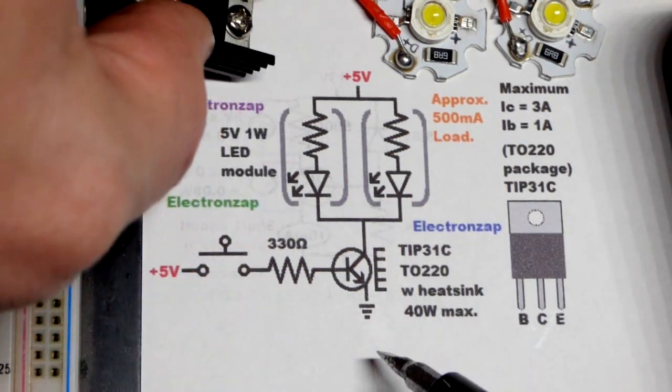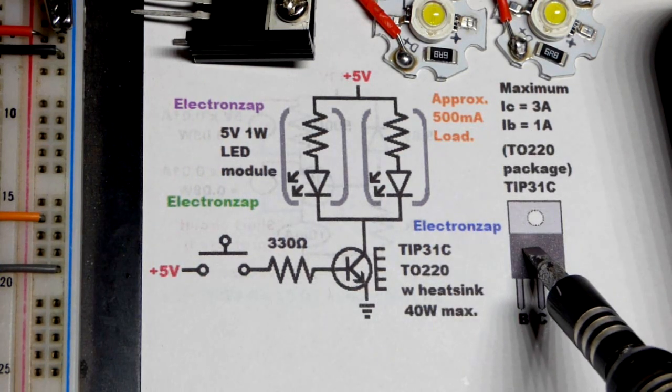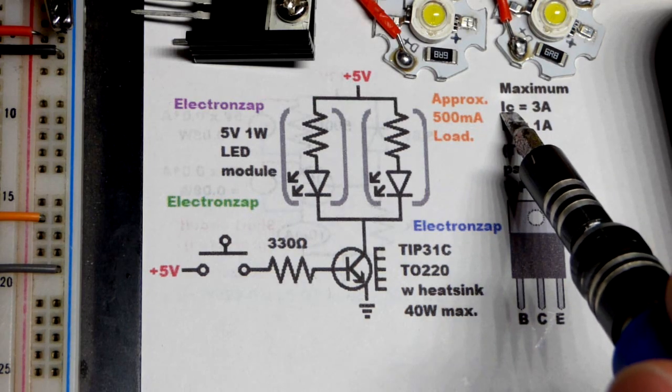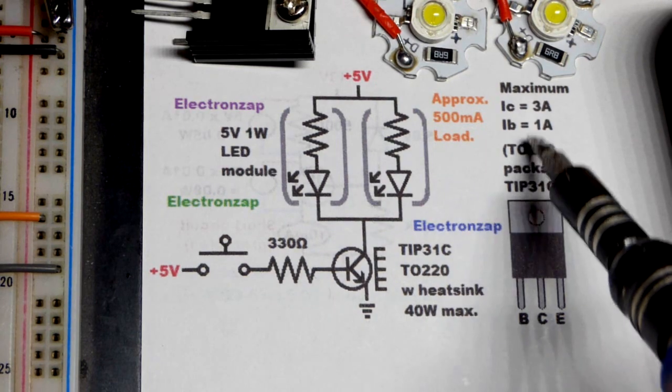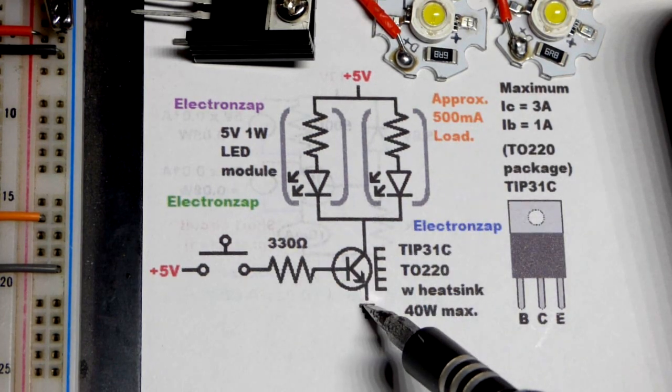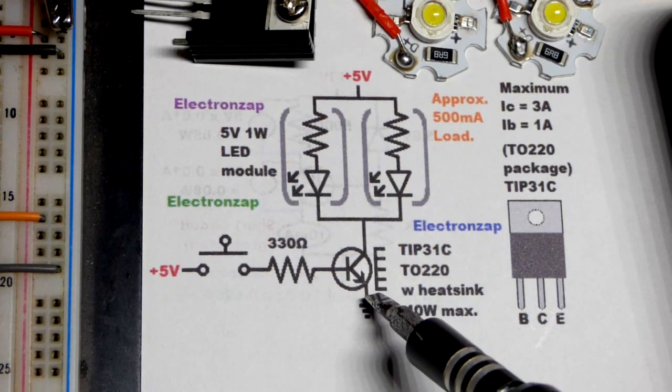So we have a lot of base current. This particular transistor here has a maximum current going through the collector, that's what that little C means, about three amps, and a maximum current going through the base of one amp.